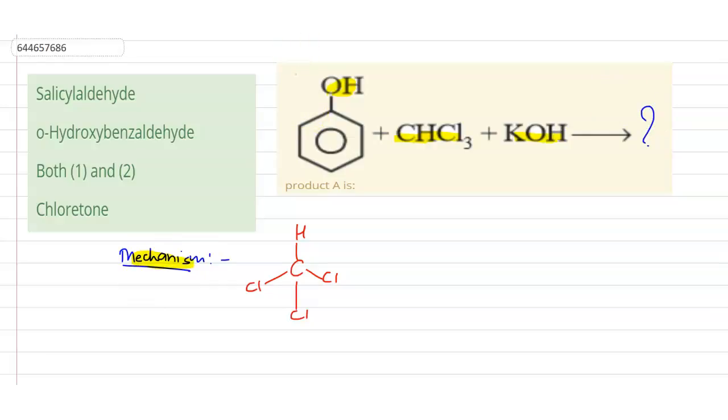If we talk about the mechanism, what happens is we are having CHCl3 and here we are having the base, that is OH minus. It abstracts the proton from here and there will be a release of the chloride ion. So from here what we can see is there will be a formation of the carbene, which is an electron deficient species having a neutral carbon with a valence of two and two unshared valence electrons.